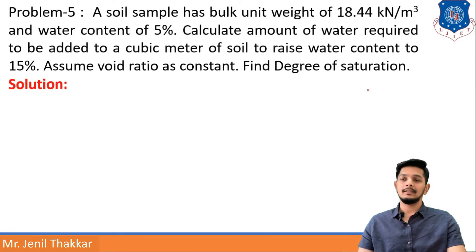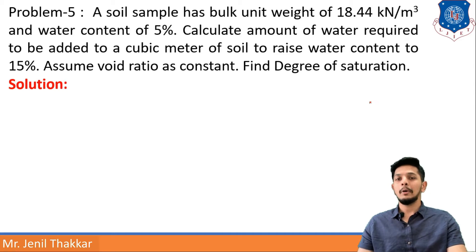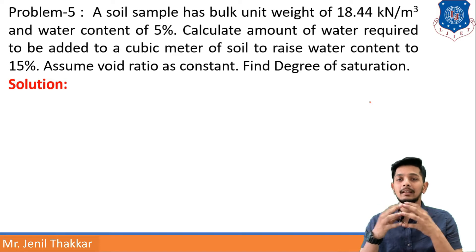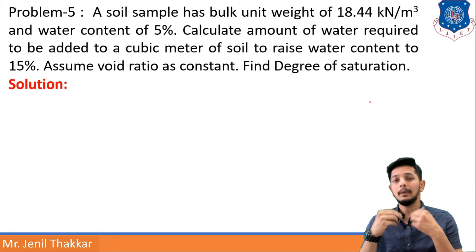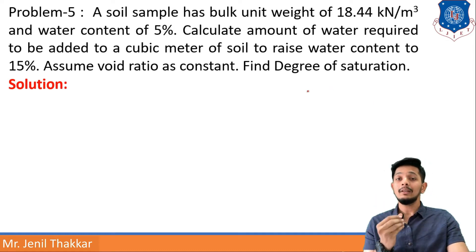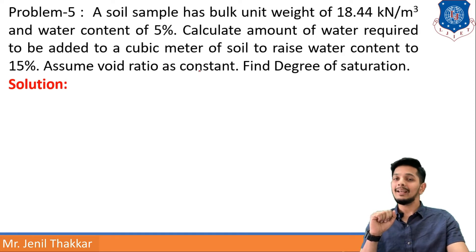The next problem: a soil sample has a bulk unit weight of 18.44 kN/m³. Bulk unit weight gamma_b is provided, and water content of 5% is there, so water content w will be 0.05. Calculate the amount of water required to be added to a cubic meter of soil to raise water content from 5% to 15%. We also need to find degree of saturation SR.